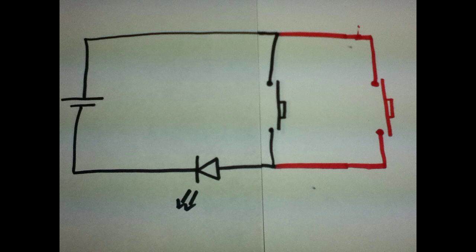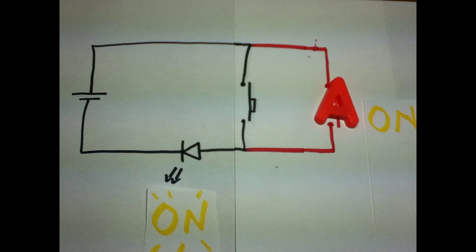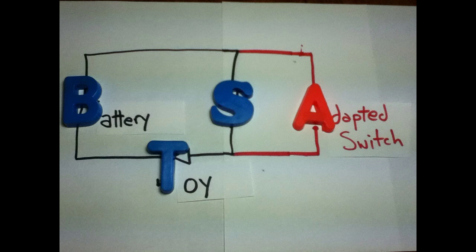Now, if my original switch is pressed on, then the light is on. Or in the same way, if the adapted switch is on, it also will turn on. So I've got my battery, my original switch, my adapted switch, as well as the toy itself.